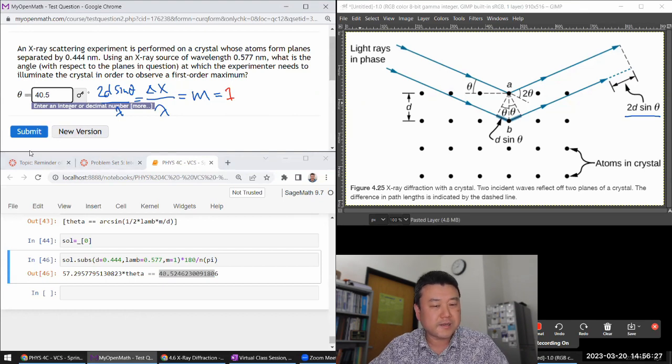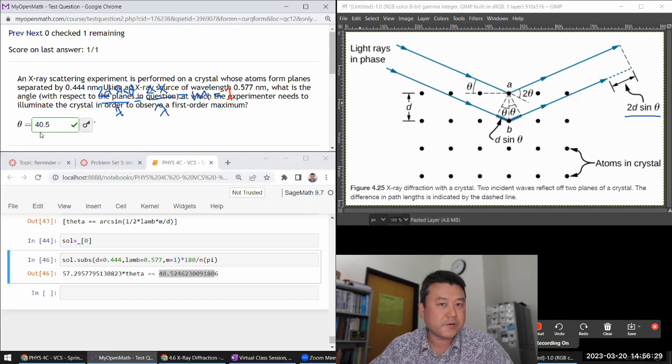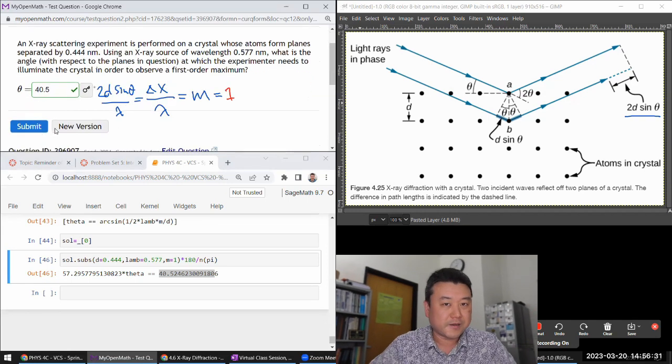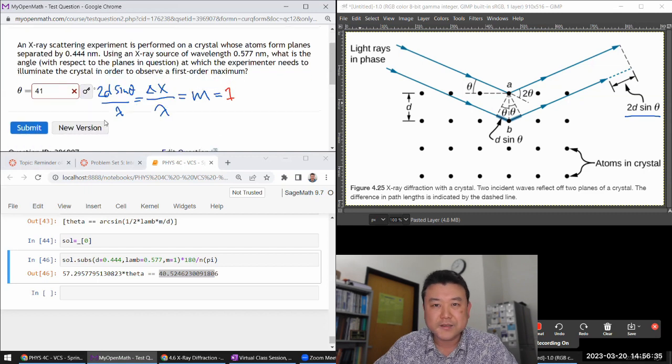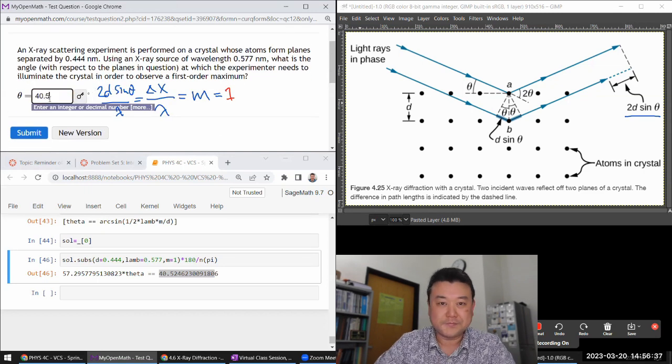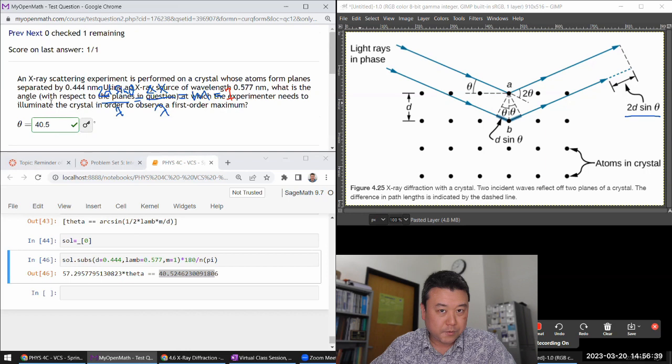I think if I enter 41, it will say that's wrong. Three significant figures. That's what you're going to keep. If you say 41, that's right at the limit. I think it will say no. All right.